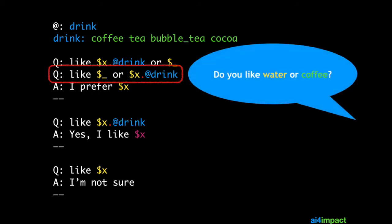Now if you had instead asked do you like water or coffee then the discard is in the first position and coffee is in the second and dollar sign x will match coffee and so again the response is I prefer coffee.